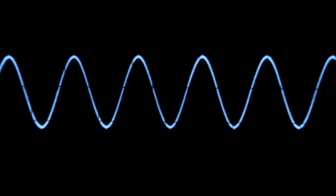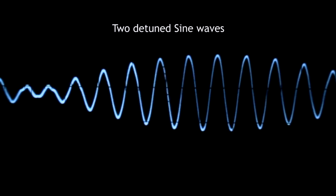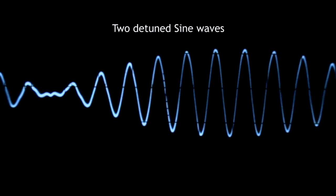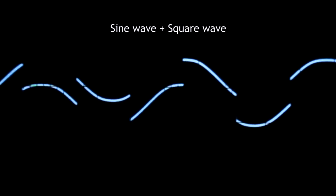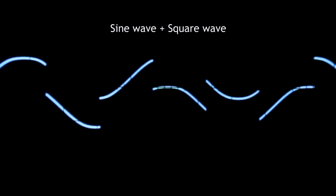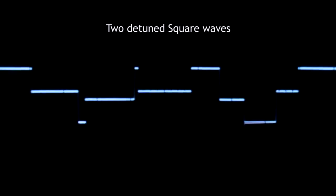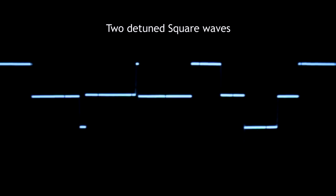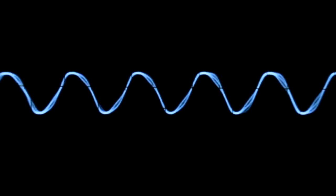Now let us mix some waves using a regular audio mixer. And now let us modulate some waves. This is a sine wave which is being modulated by another sine wave, using a frequency modulation or FM input.